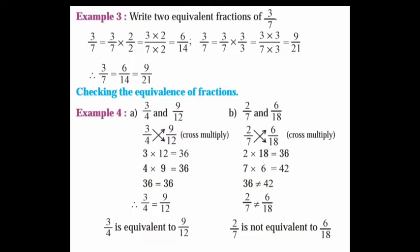Checking the equivalence of fractions. Example 4. A: 3/4 and 9/12. Cross multiplication: 12 times 3 is 36, and 9 times 4 is 36. Since 36 equals 36, therefore 3/4 is equal to 9/12. B: 2/7 and 6/18. Cross multiplication: 18 times 2 is 36, and 7 times 6 is 42. So 36 is not equal to 42, so this is not equivalent.